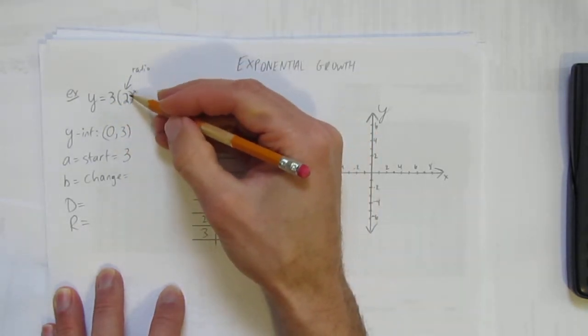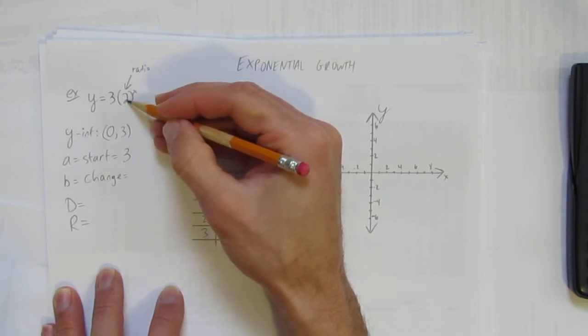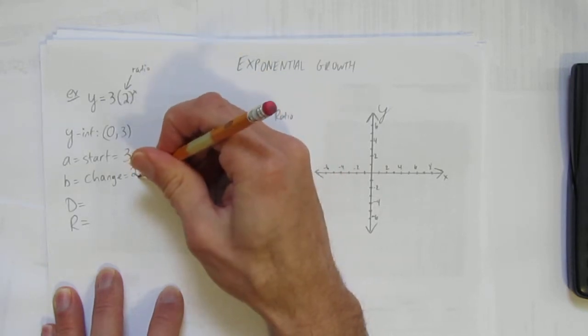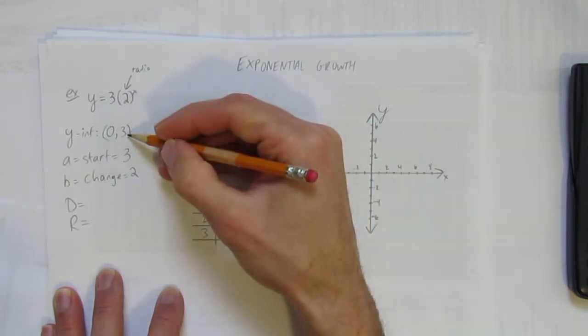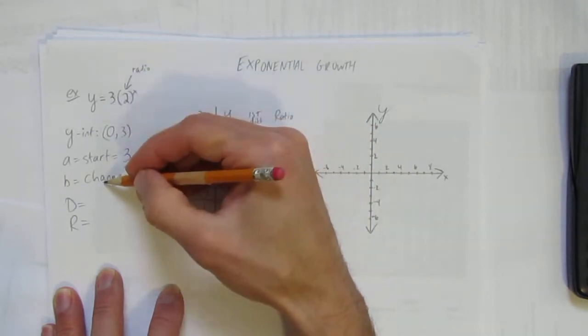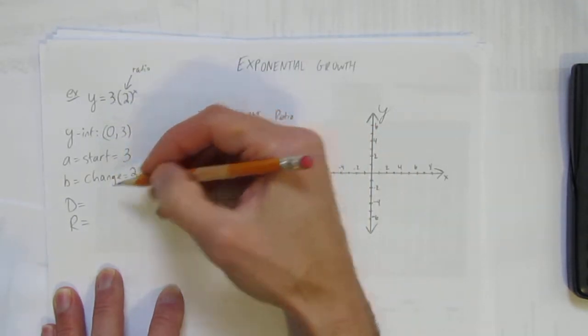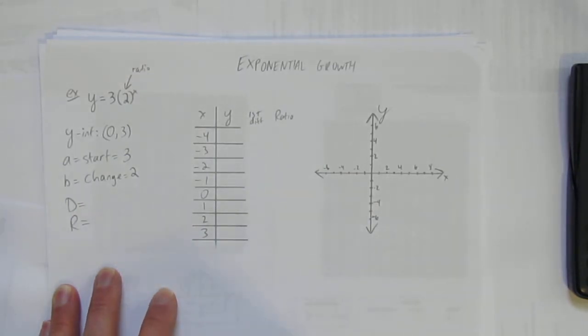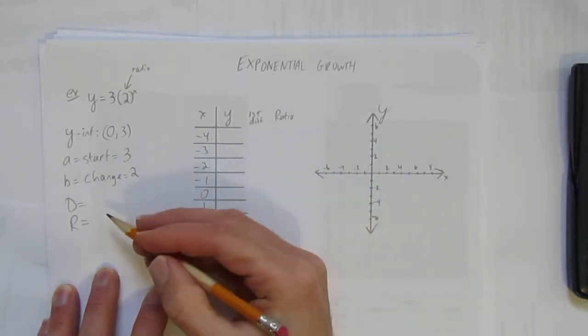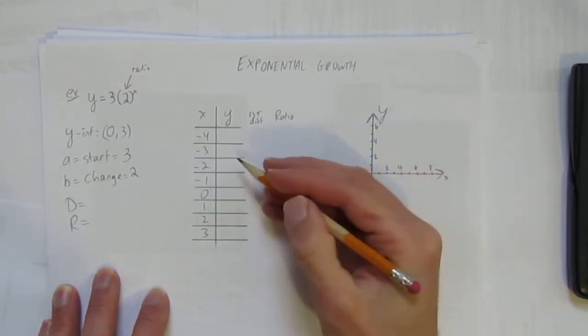And like I said, this change number is the ratio, the b-value or base value, that's a 2. So we've got our y-intercept and we've identified the start value and the ratio or change. We can do domain and range, but I'm going to wait. It's so much easier once you make this sketch, so let's come back to domain and range.